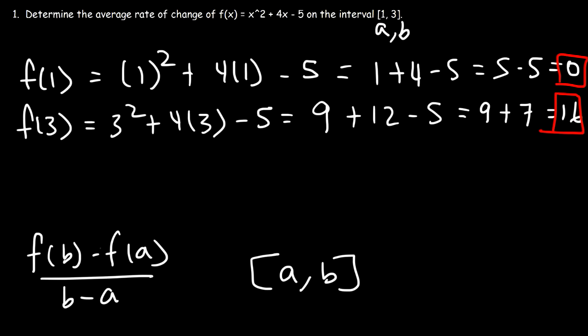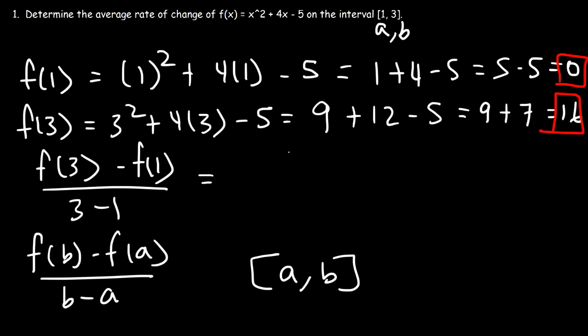So now let's use this expression. So that's going to be f(3) minus f(1) divided by 3 minus 1. f(3) is 16, f(1) is 0, and 3 - 1 is 2. 16 divided by 2 is 8.